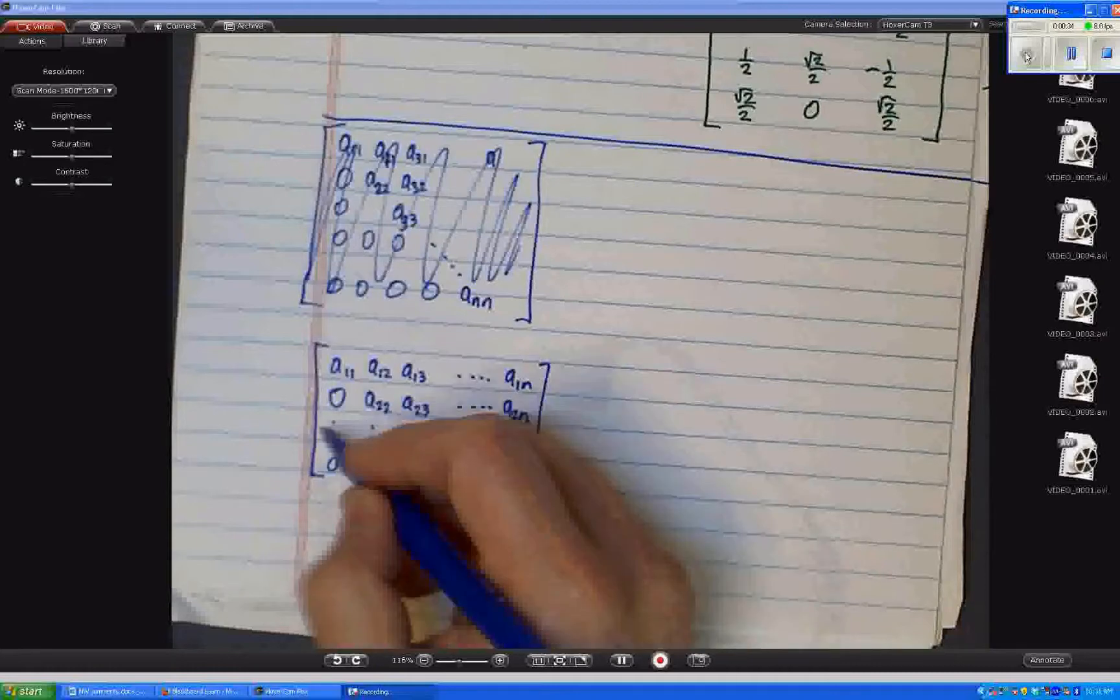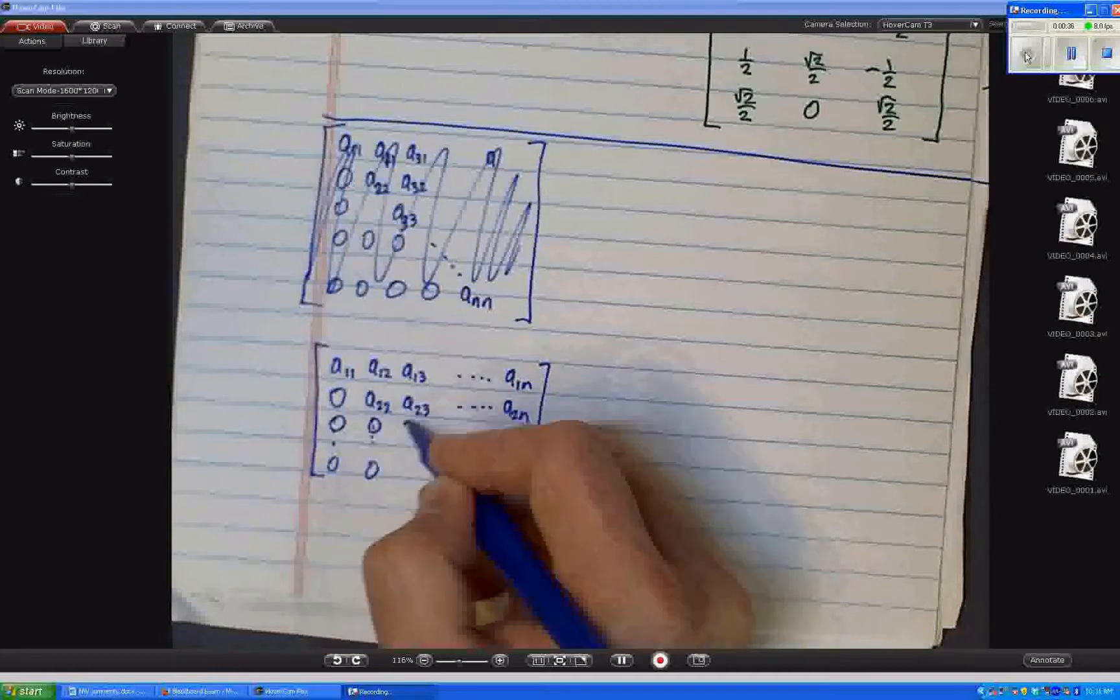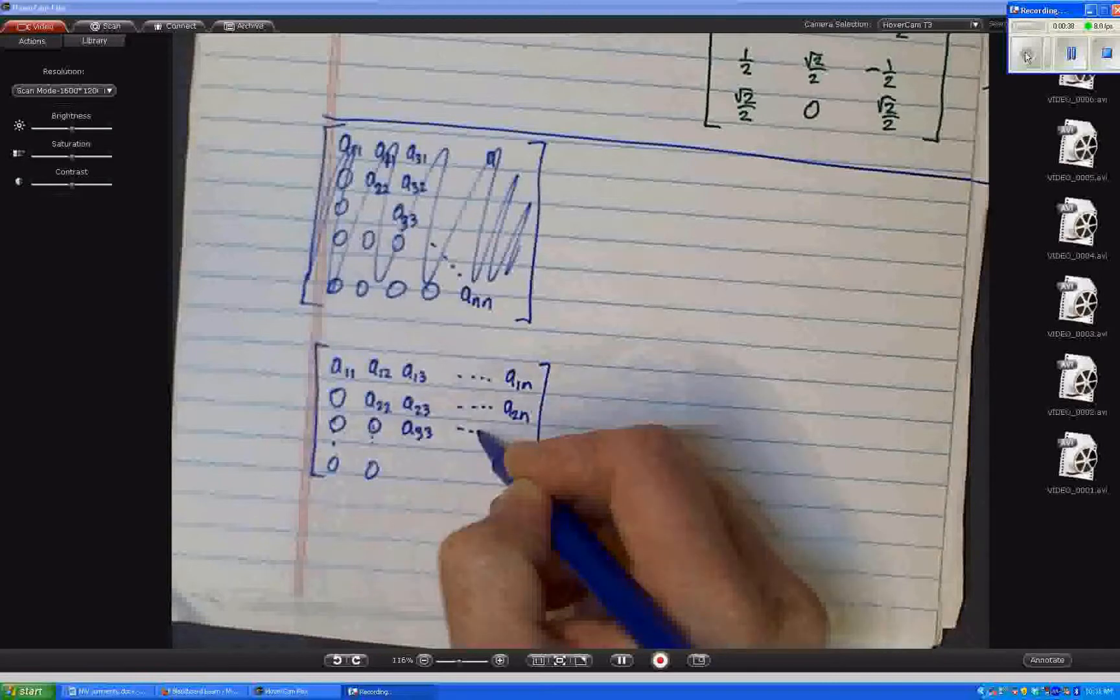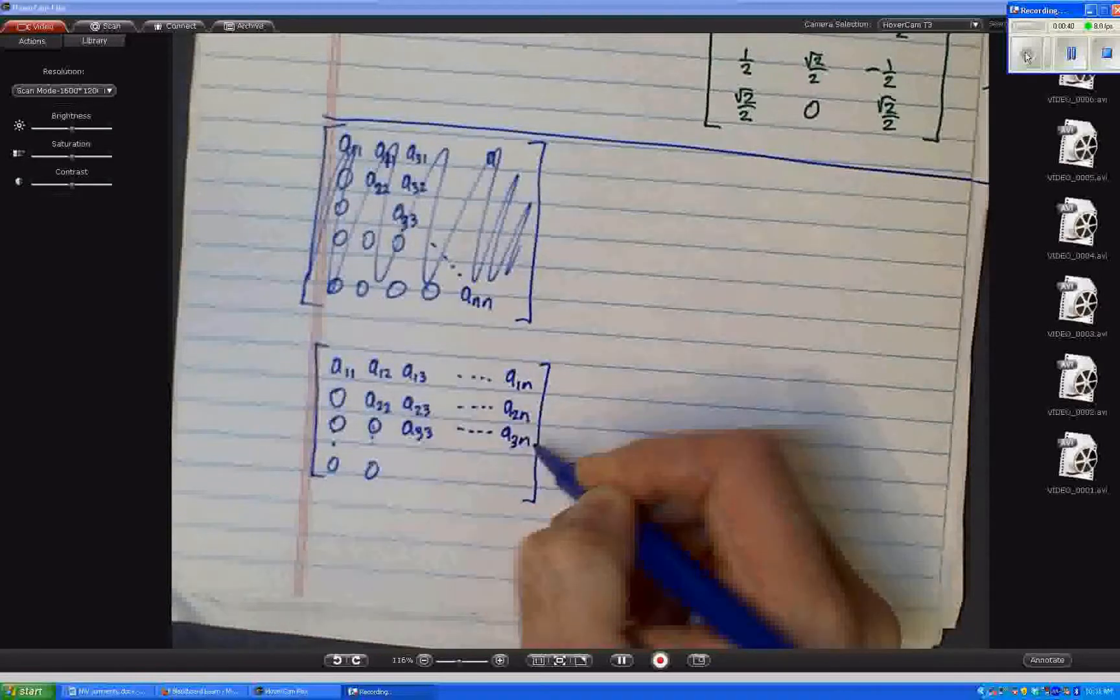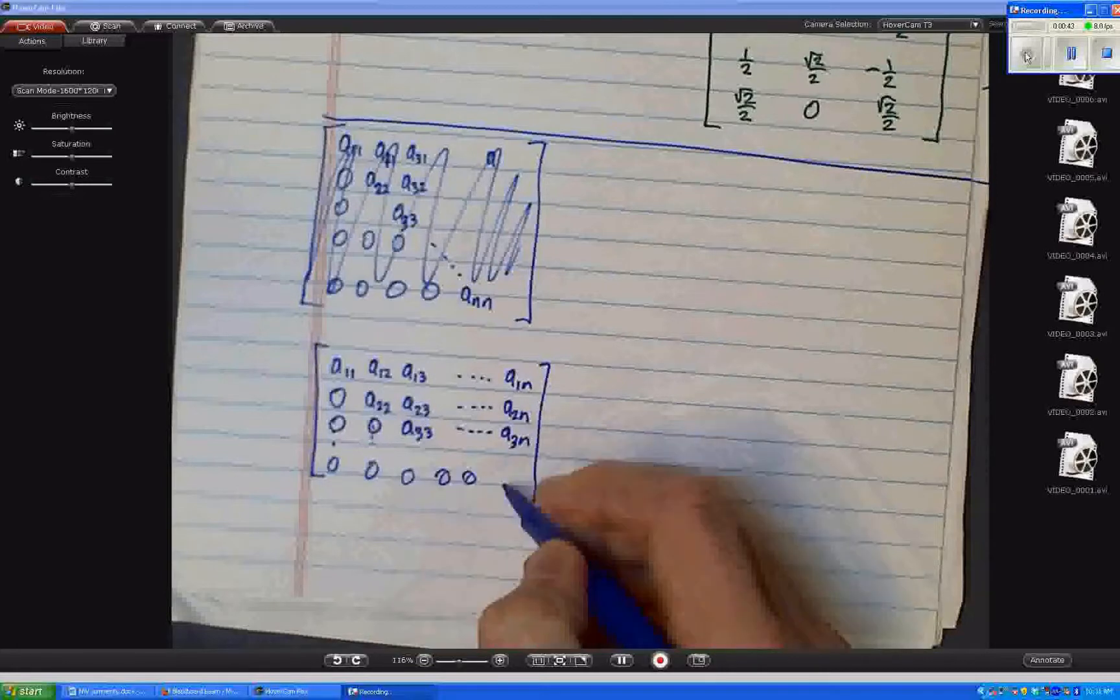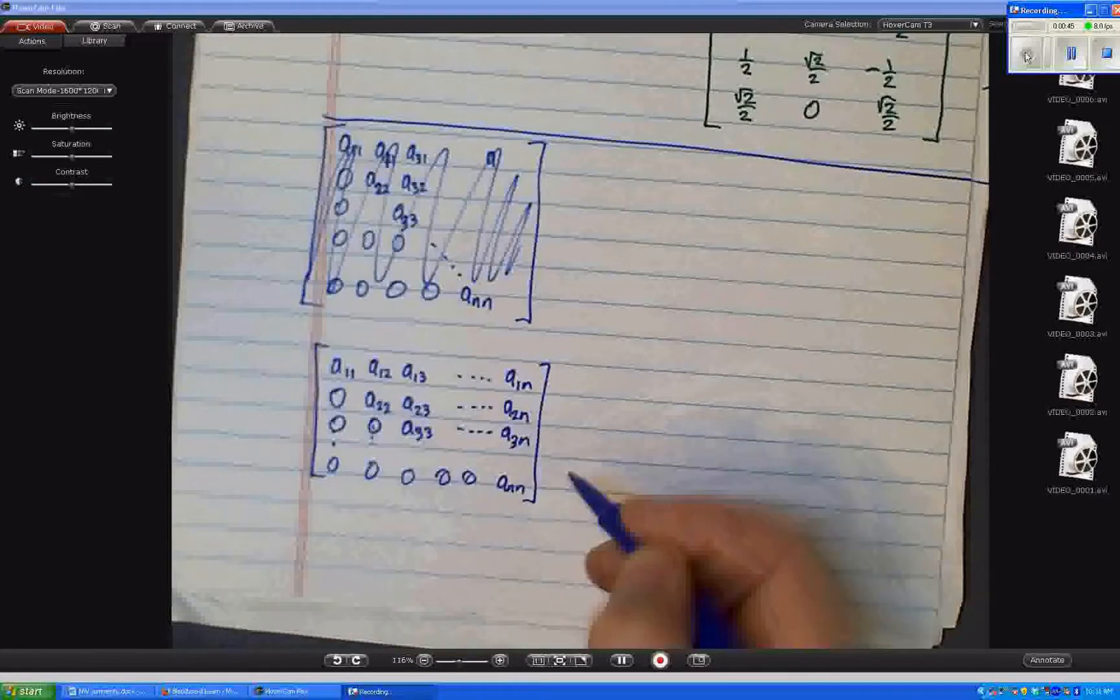In the third row, I have 0, 0, A33, all the way to A3N. And the very last row only has ANN. That might not be 0.